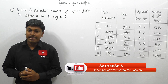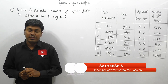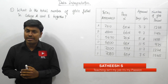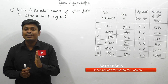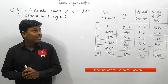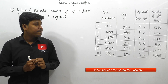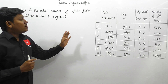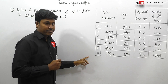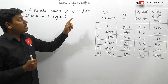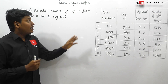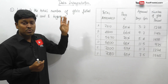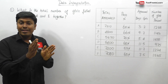Let me move on to data interpretation, question number 10. According to me, this is one of the best data interpretation questions for competitive exams. Here they have given a table chart. The first column is colleges A to F, the second column is total number of students appeared, the third column is pass percentage, and the fourth column is students appeared given in a ratio of boys and girls.